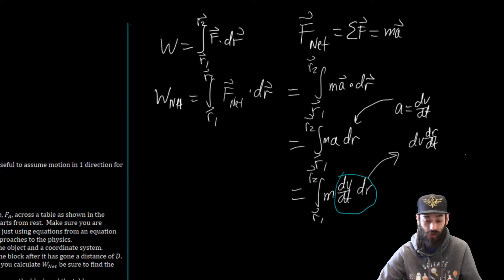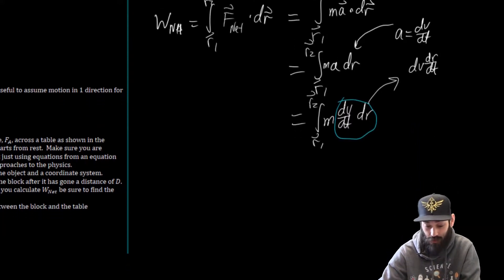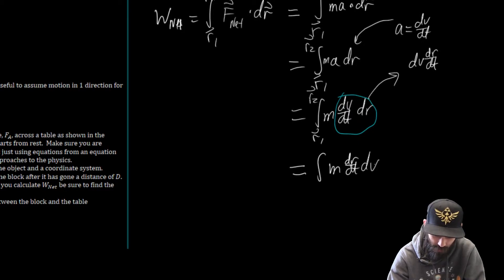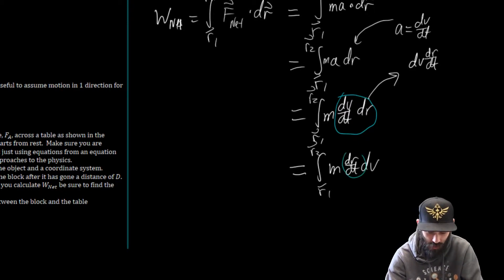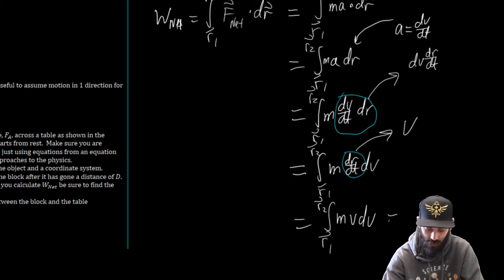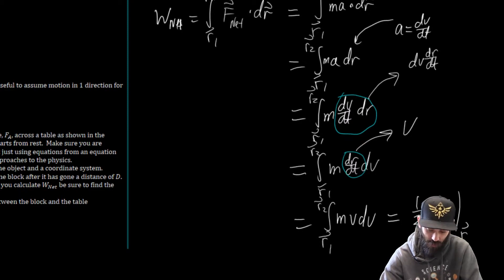We can apply the chain rule here. What I'm going to do is move the dt from being underneath dv to underneath dr. So that's to say this is going to be dv times dr/dt. I just move the dt underneath the dr instead. Mathematicians would not enjoy that because it's not a rigorous proof — really what you're doing is the chain rule. But for our purposes this works. So this says we have the integral M times dr/dt times dv from R vector 1 to R vector 2.